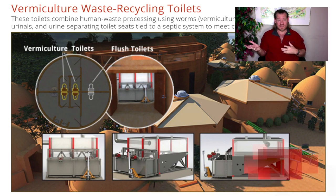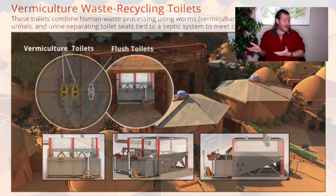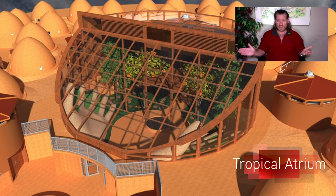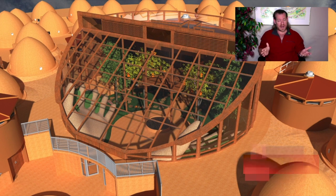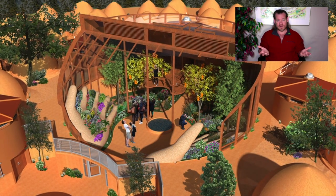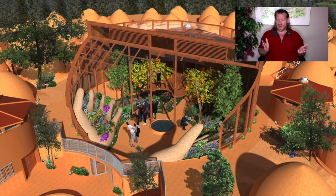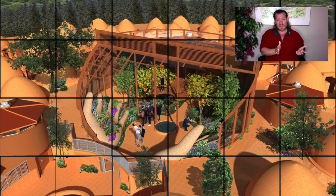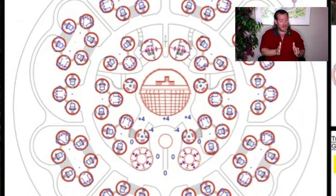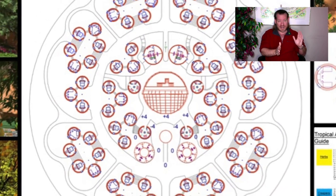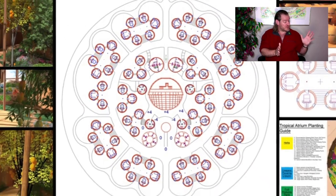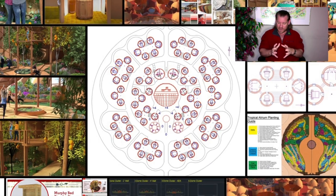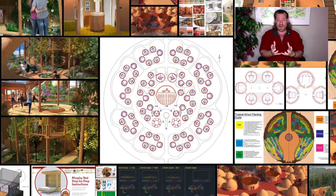Let's address both the physical foundations of sustainability — food, energy, and housing — as well as the emotional foundations. That means highest good approaches to fulfilled living, education, economics, and true earth stewardship. And let's put all these things together in one model, in one evolution.